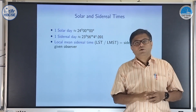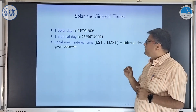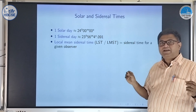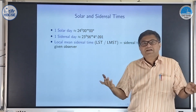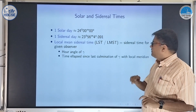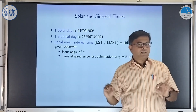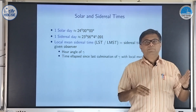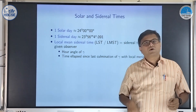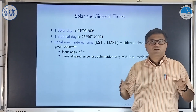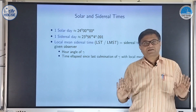We can define Local Mean Sidereal Time. Why I say 'mean' I will come to in a minute. Local Mean Sidereal Time, or LST, is the sidereal time for a given observer — meaning the hour angle of the vernal equinox point. It is the time since the last culmination of the vernal equinox with our local meridian. That hour angle of the vernal equinox is the same as your sidereal time.